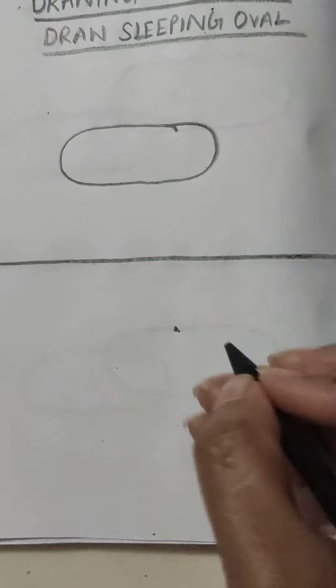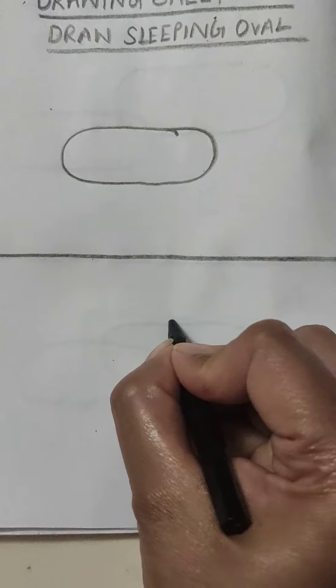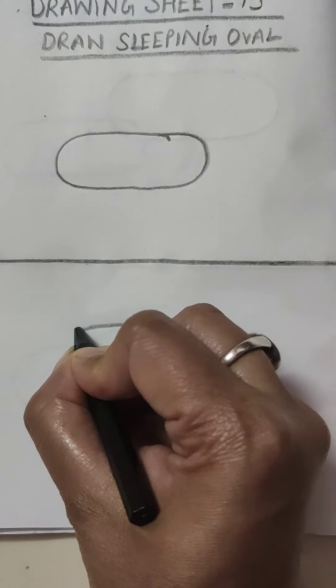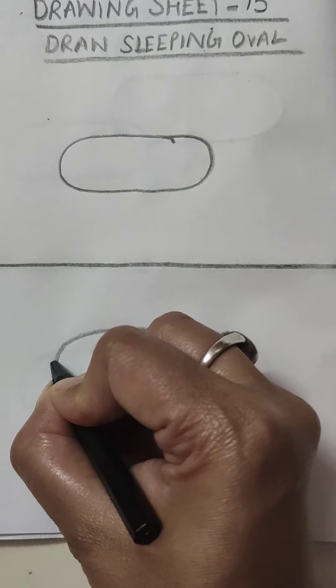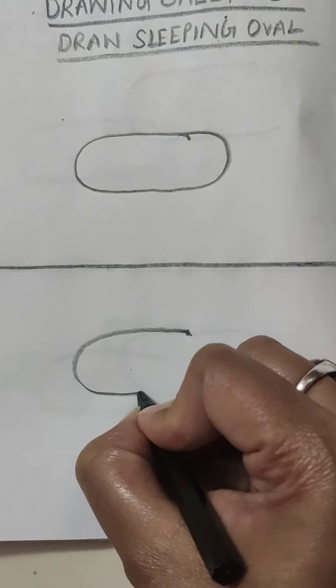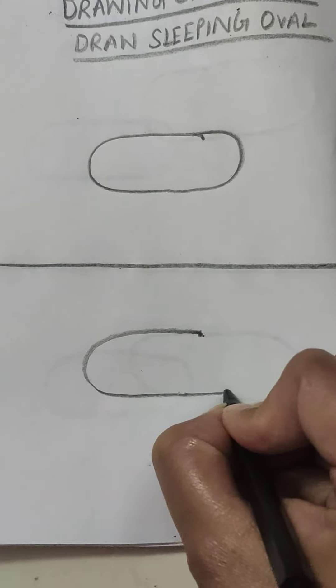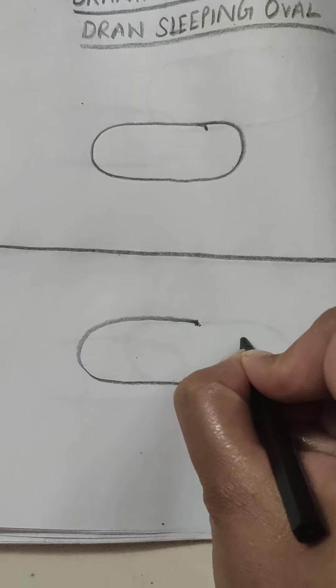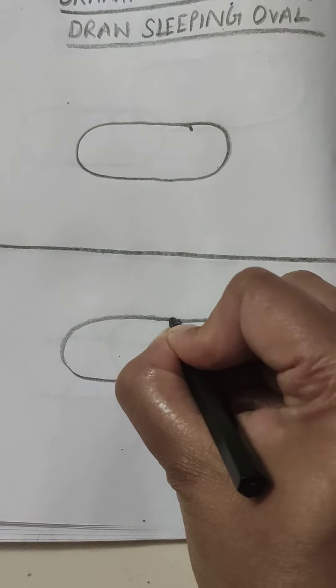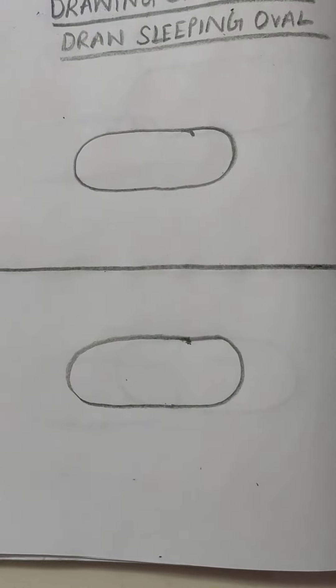Make a dot, keep your crayon on the dot and move your crayon towards your left hand side. Okay, make a curve, turn, move, keep on moving your hand. Then from here you will again turn and stop from where you started. Okay, like this.